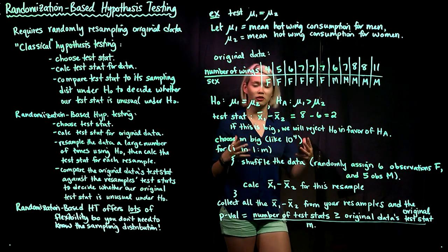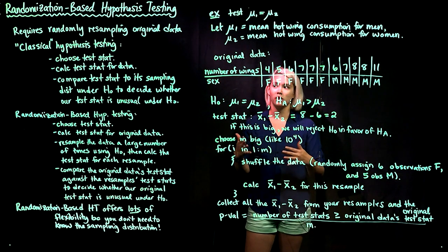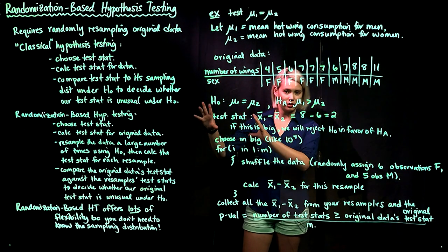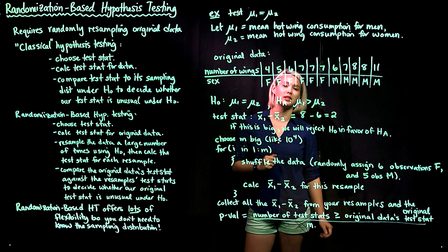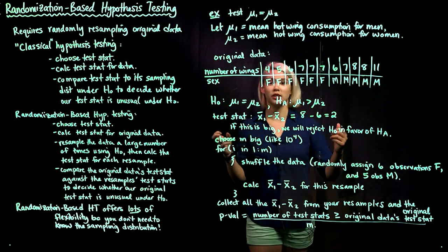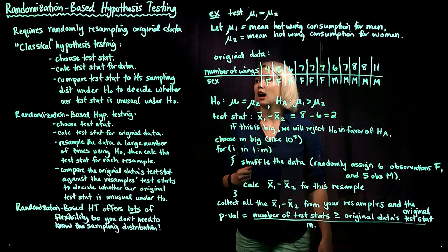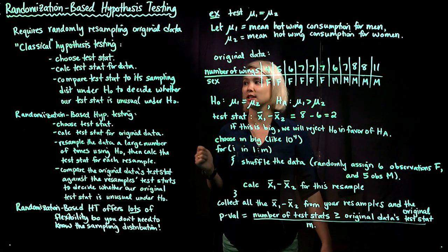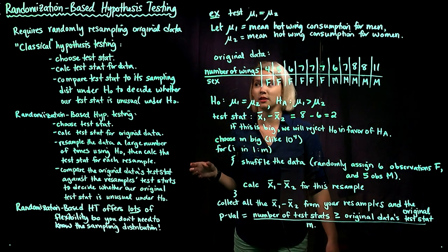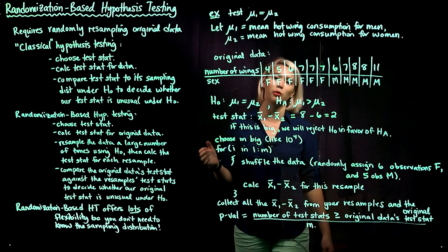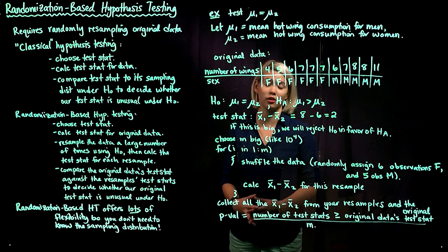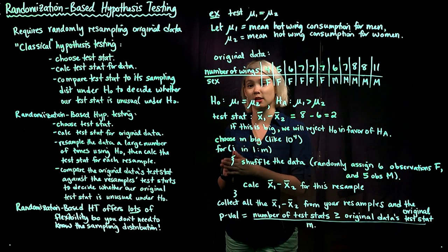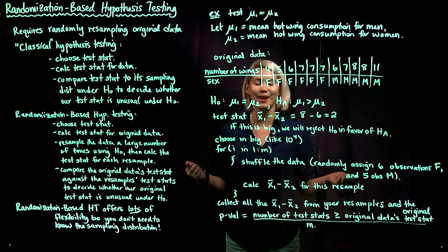The general idea is that we're going to take our original data and resample it. Let's compare this to classical hypothesis testing — using distributions like normal distributions — so we can better understand how randomization-based hypothesis testing works. In the classical approach, we choose our test statistic, calculate it for our data, and then need to know the sampling distribution of our test statistic to calculate the p-value. We compare our test statistic to its sampling distribution under the null hypothesis to decide whether our test statistic is extreme. If it is extreme, we reject the null hypothesis in favor of the alternative.